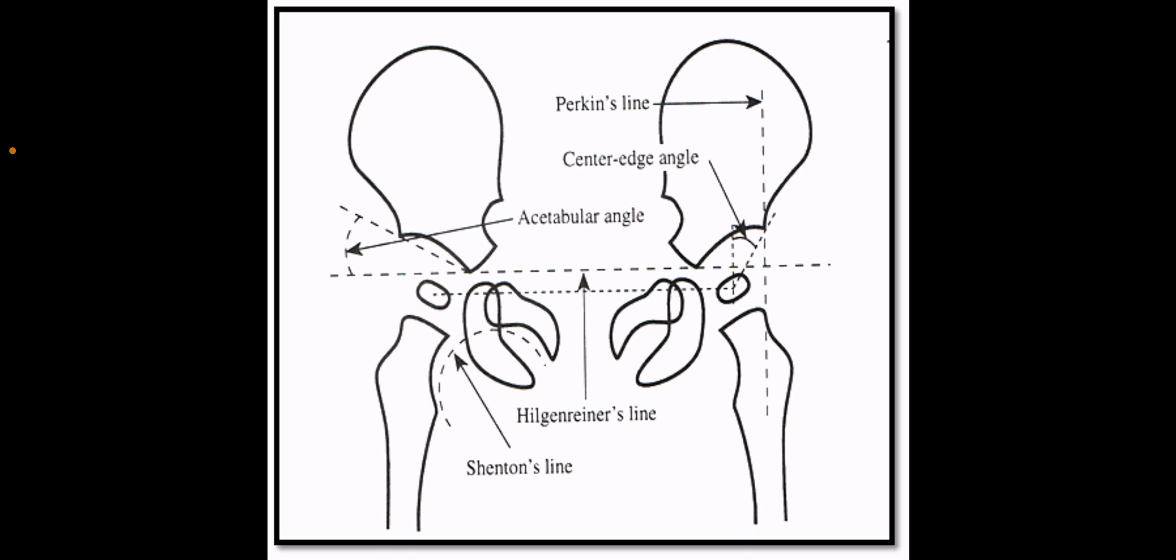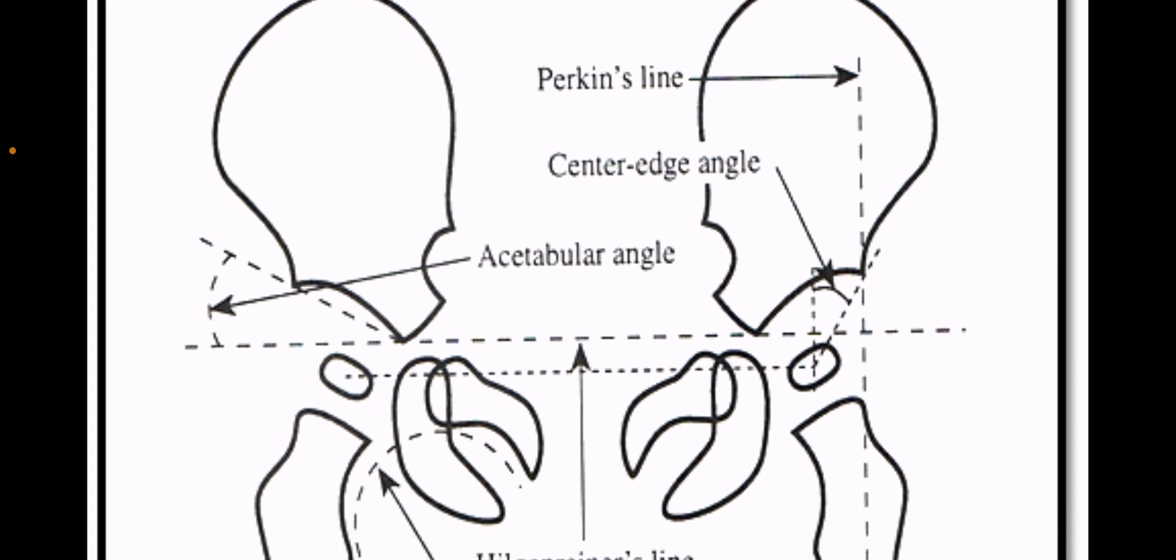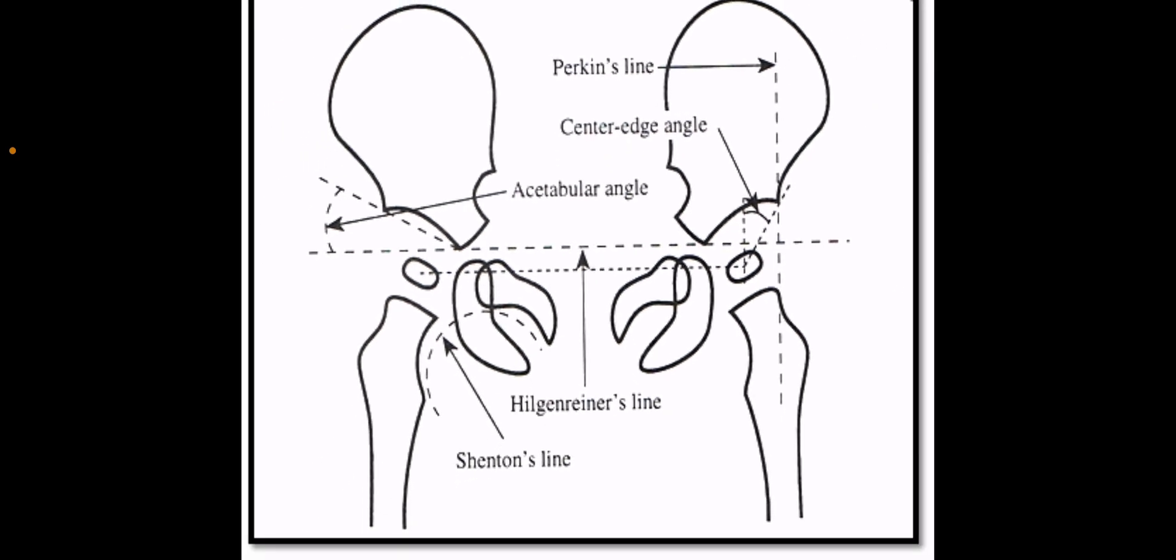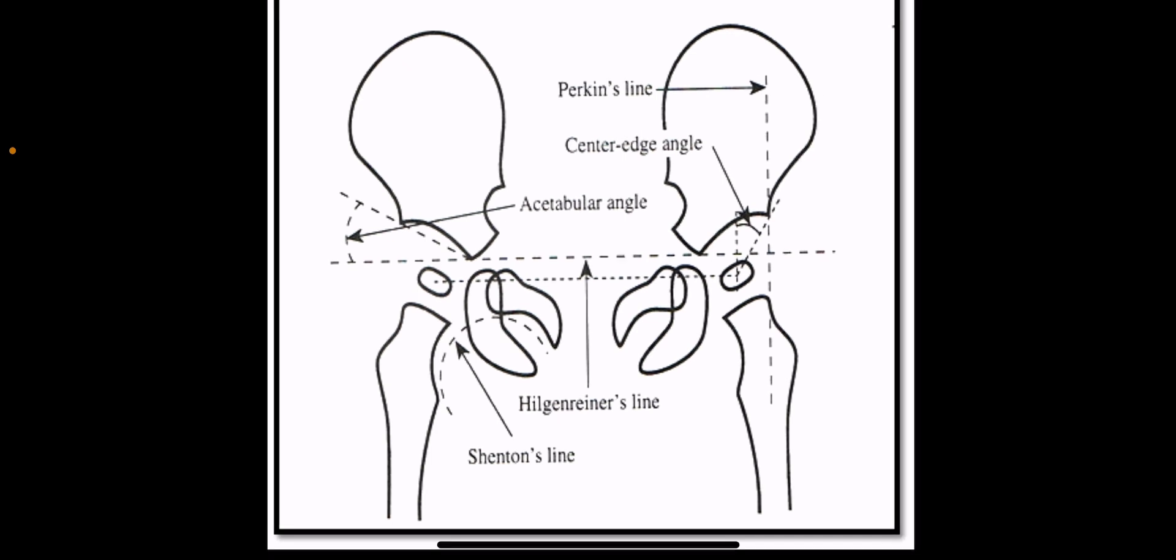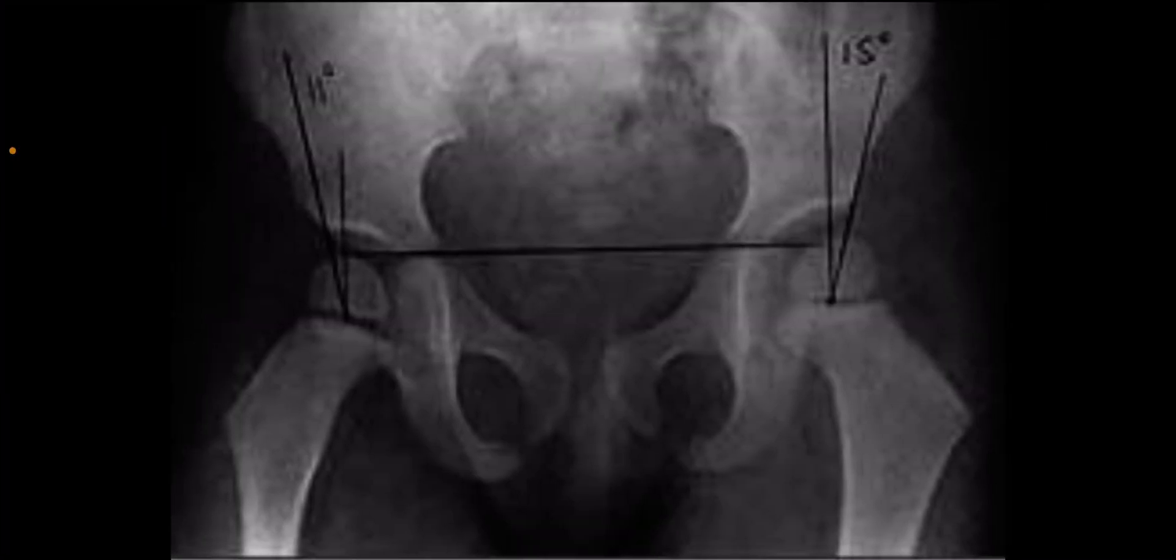Centre edge angle: angle formed by Perkins line and a line from the centre of the femoral head to the lateral edge of the acetabulum. Less than 25 degrees is considered abnormal; only reliable in patients older than 5 years.